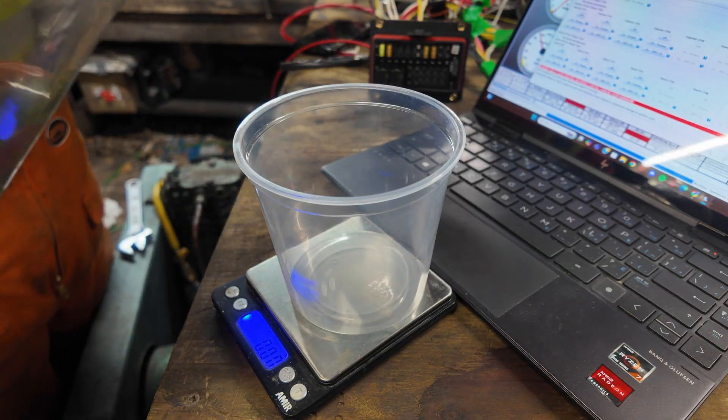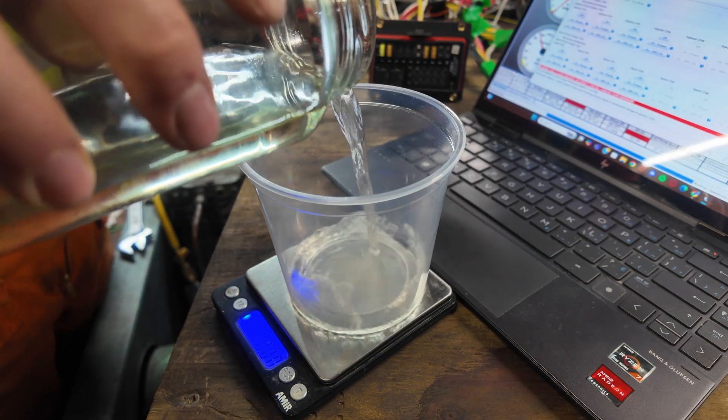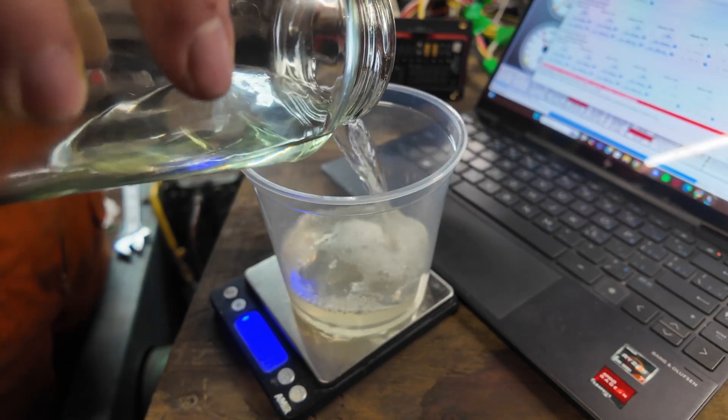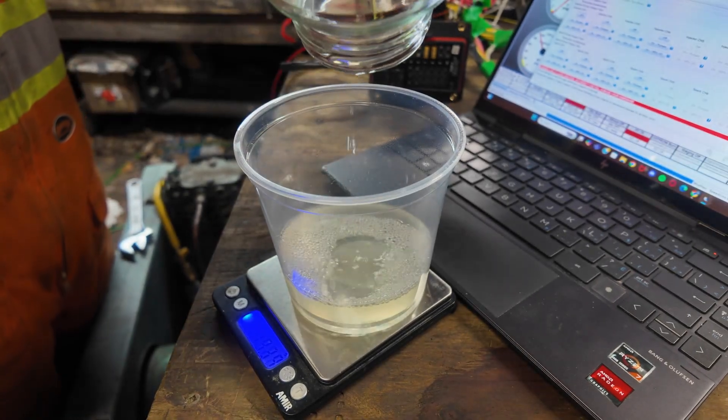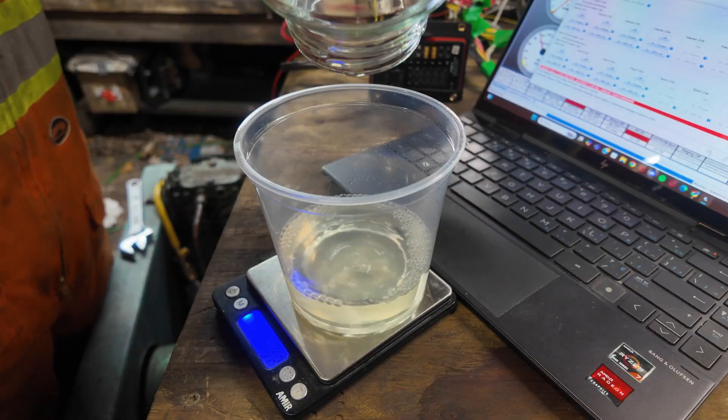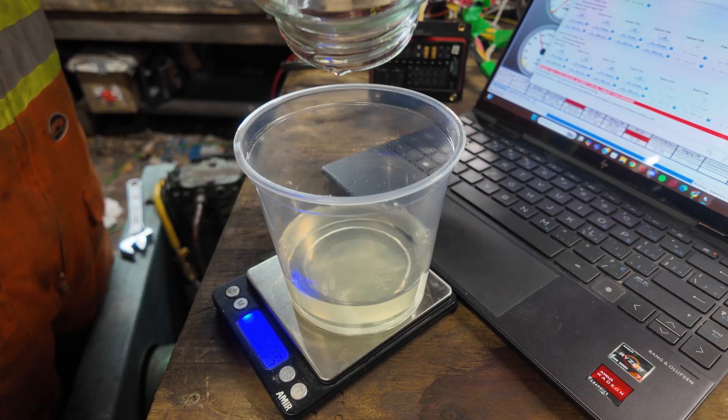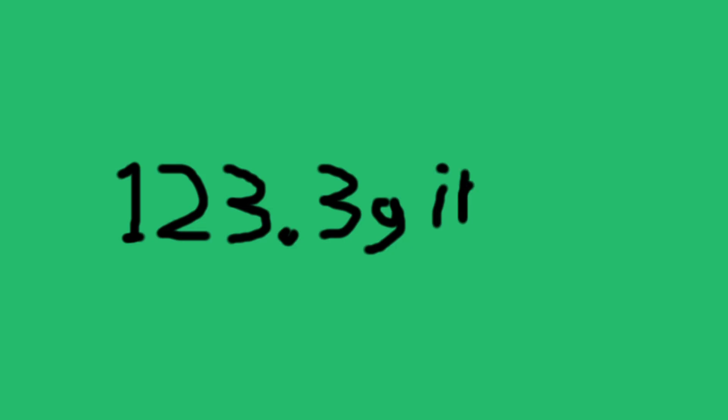I used the hardware test on Tuner Studio and a stopwatch to turn an injector on for exactly 30 seconds. Using an accurate scale, I then weighed the amount of fuel that was injected in said 30 seconds. This can obviously be used to calculate flow rate, but for now, all we care about is that, at least in my case, 123.3 grams were injected in that 30 seconds.